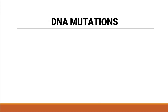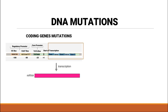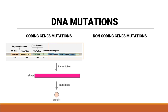DNA mutations can be of two different types. If the mutation is present in the coding region of the DNA, it is called a coding gene mutation. Coding genes are basically going to code for messenger RNA, and this messenger RNA will affect the protein produced from it. The other type can be present in the non-coding area of the DNA, and it is called a non-coding gene mutation.